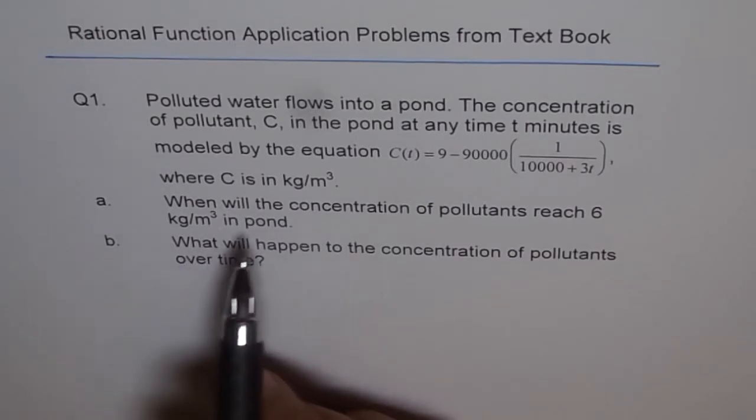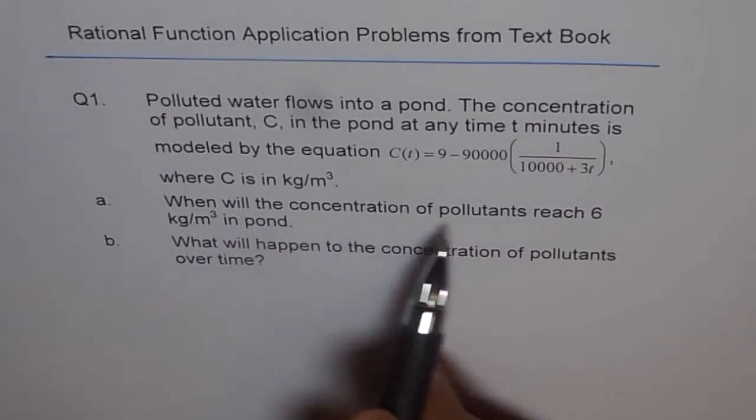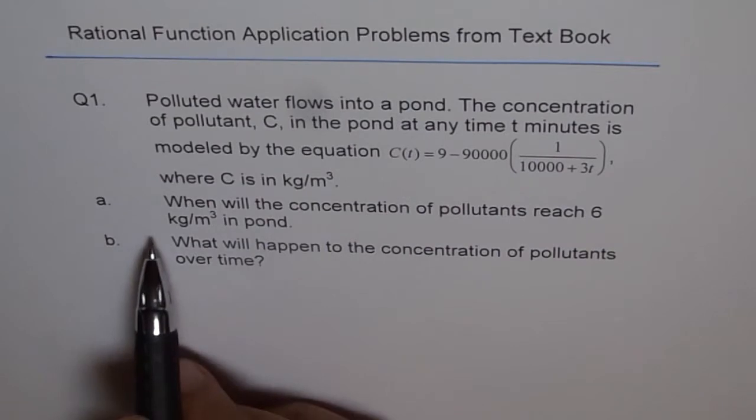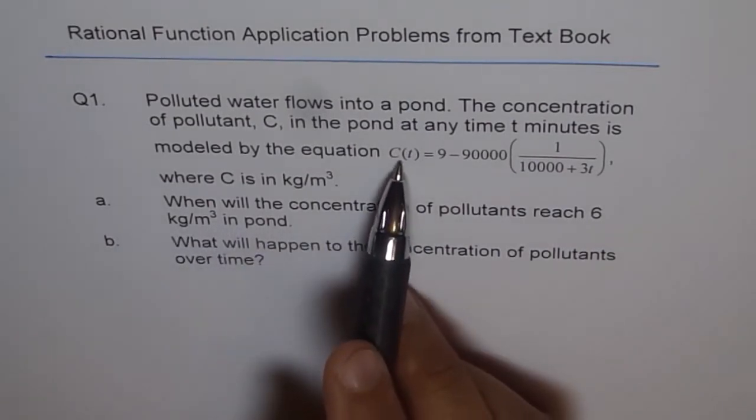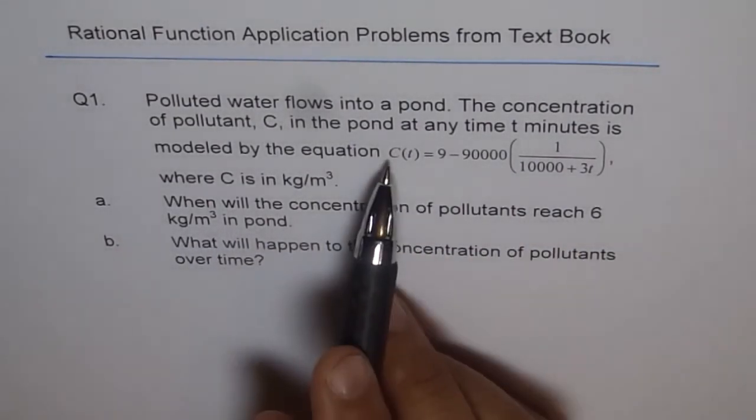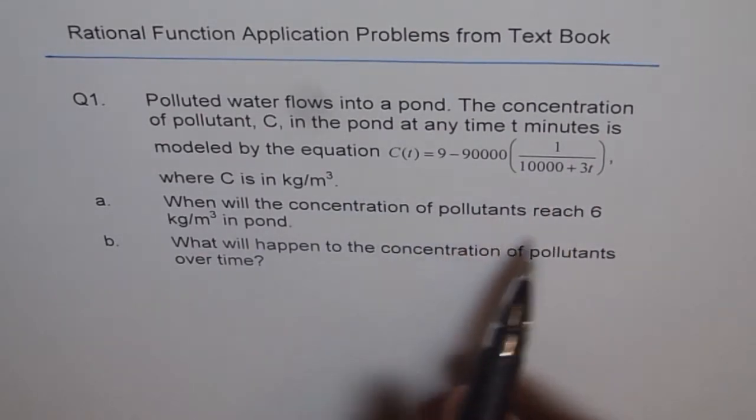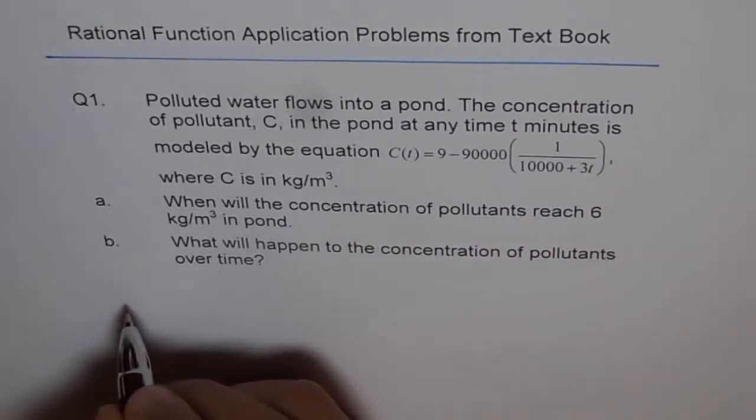Well, for part a, when will the concentration of pollutants reach 6 kg per meter cubed? That means C(t) is 6. So we can just plug in 6 and find t. That is part a. So let's do that part.